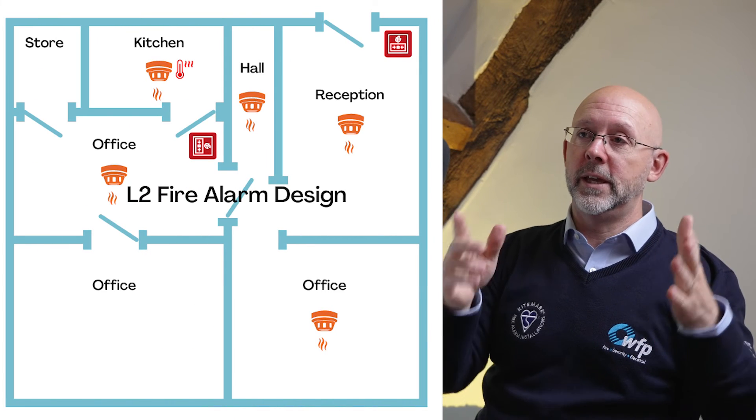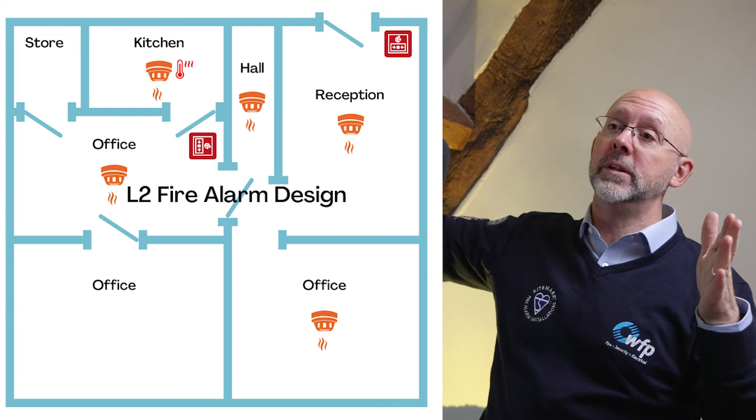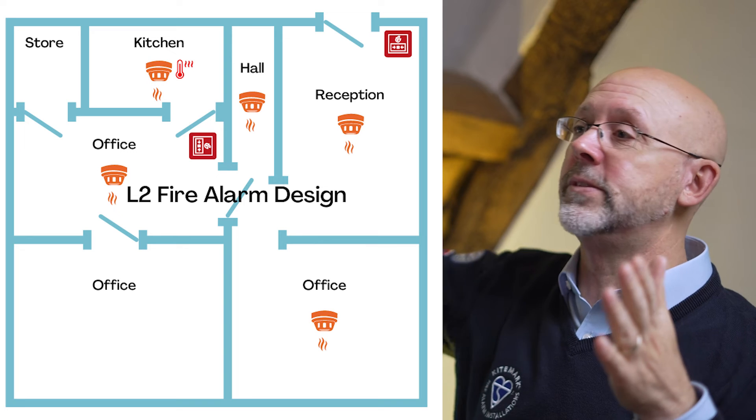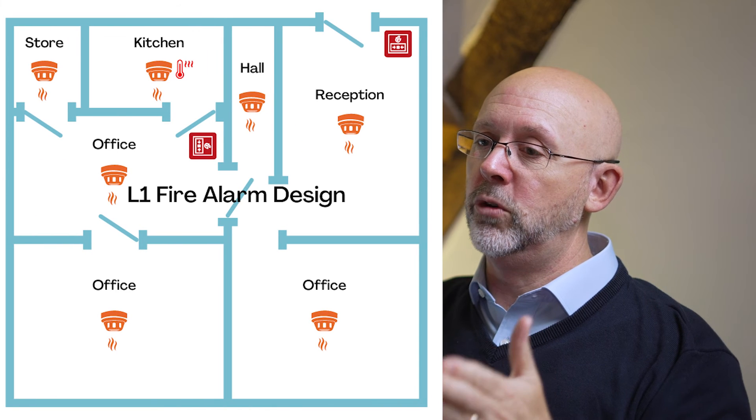With an L3 system, even if a large room would normally require five detectors, you'd only put one, because you're only worried about smoke leaving that room and affecting the escape route. L2 is exactly the same as L3, except the fire risk assessor has identified specific high-risk areas within rooms — such as server cupboards or plant rooms — that warrant additional detectors. One or two of these additions make the difference between L3 and L2, so L2 is essentially a bespoke version of L3.